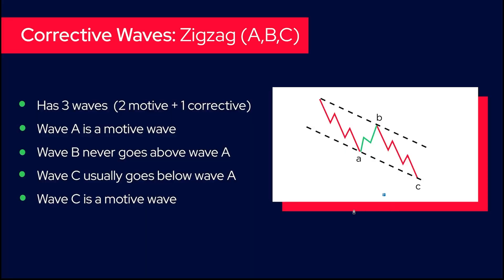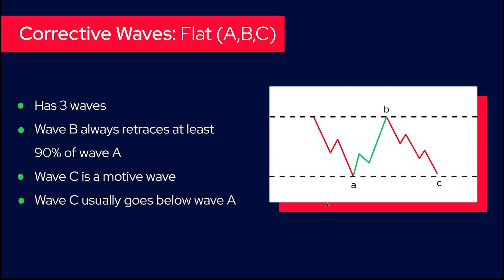This was the zigzag, a very interesting pattern. Let's go to the flat, and then I'm going to show you how those two combine together. This is the zigzag and now we have the flat. What's the difference? A flat, as the name is saying, is flat. It's a corrective pattern that usually develops in a horizontal channel.